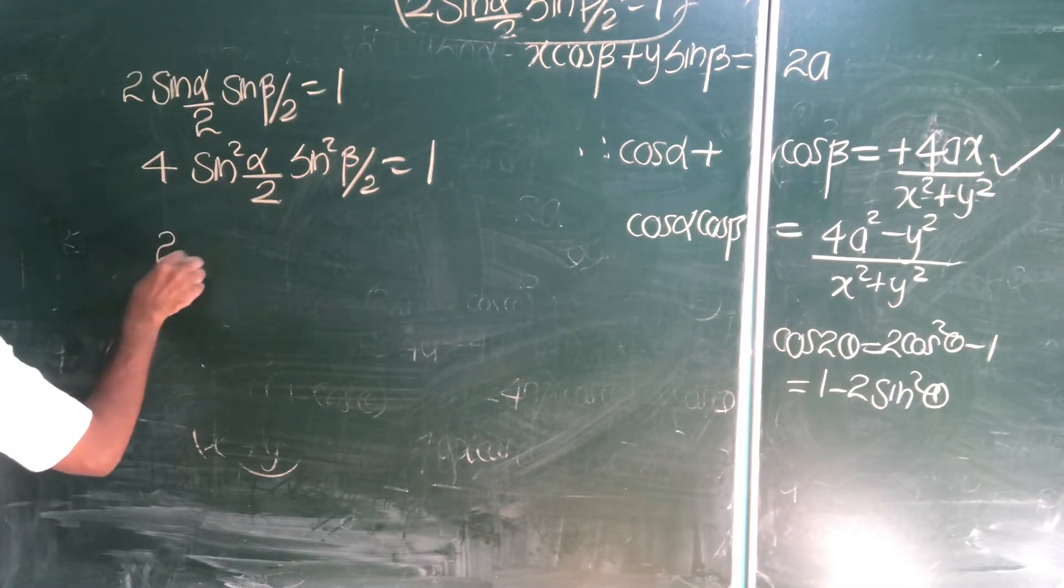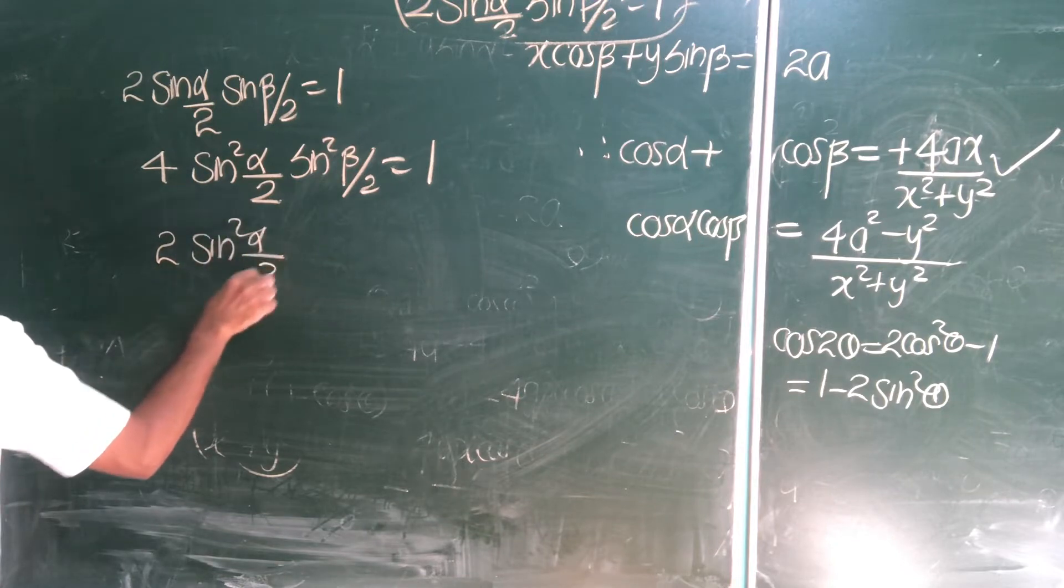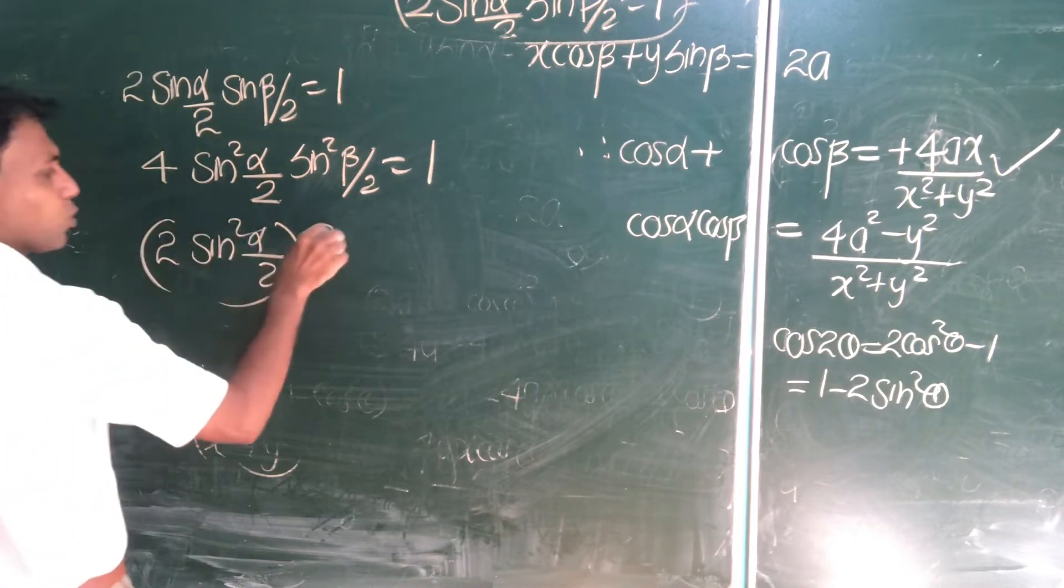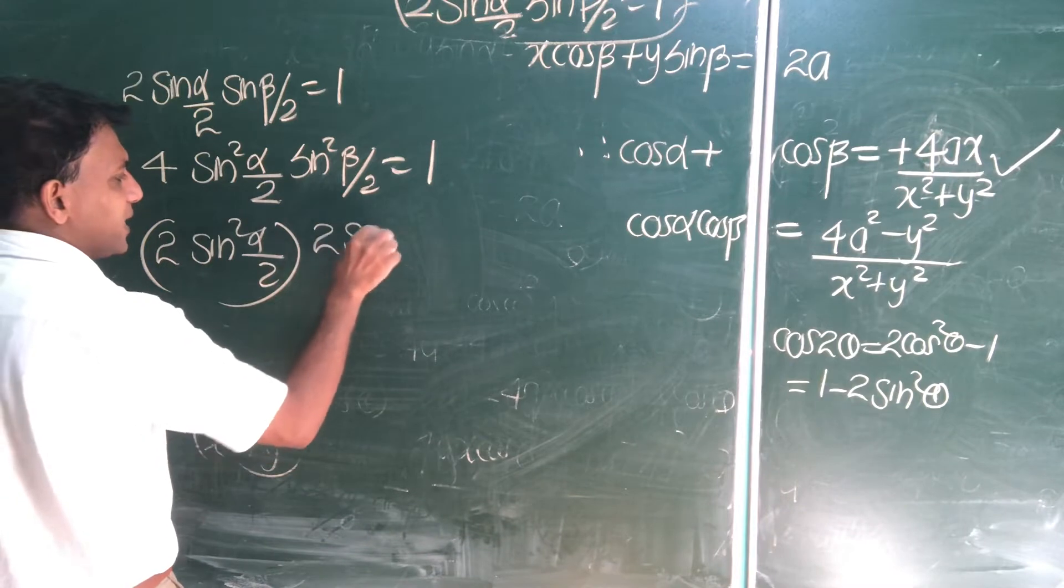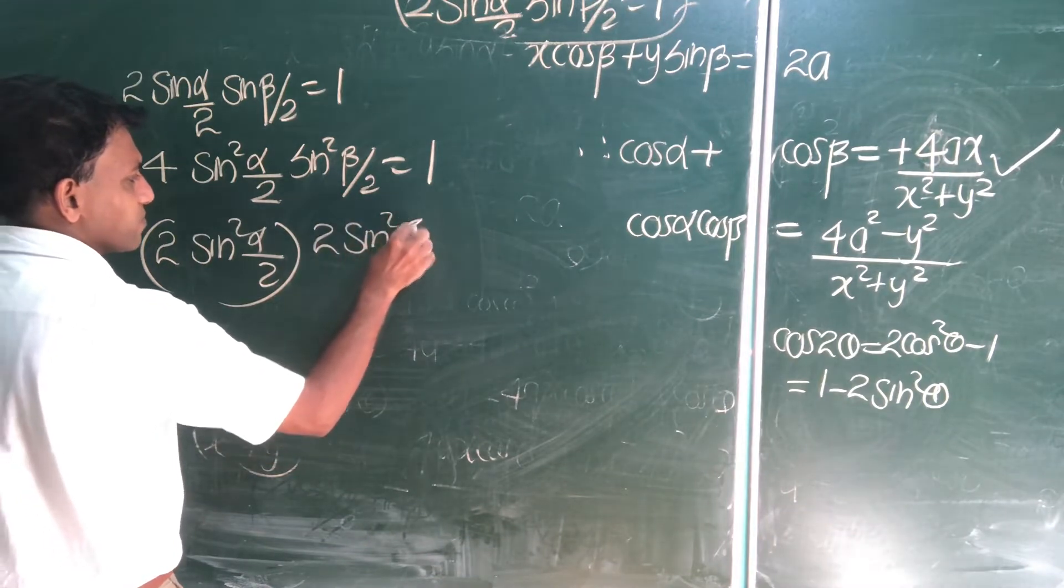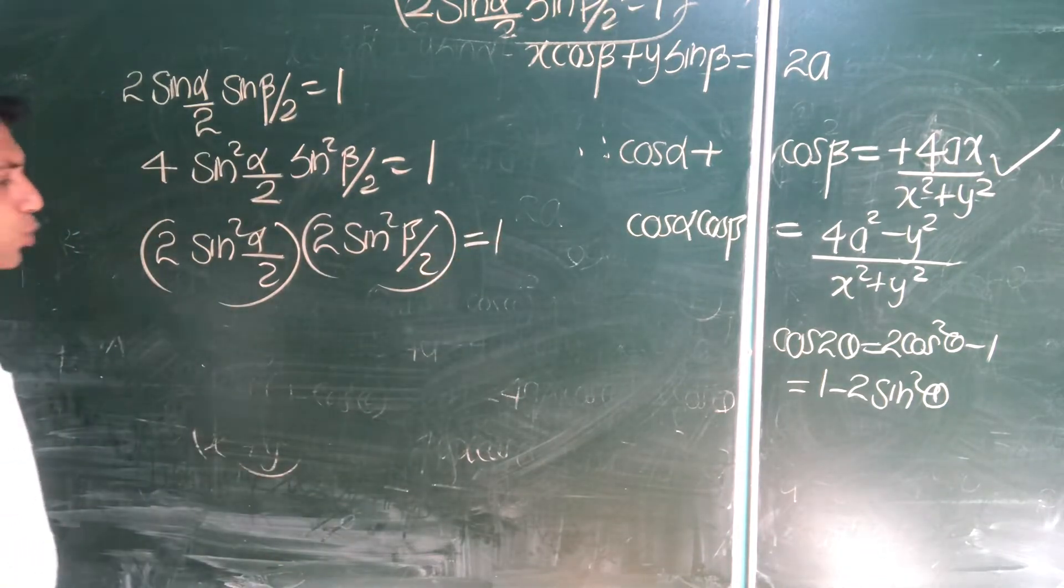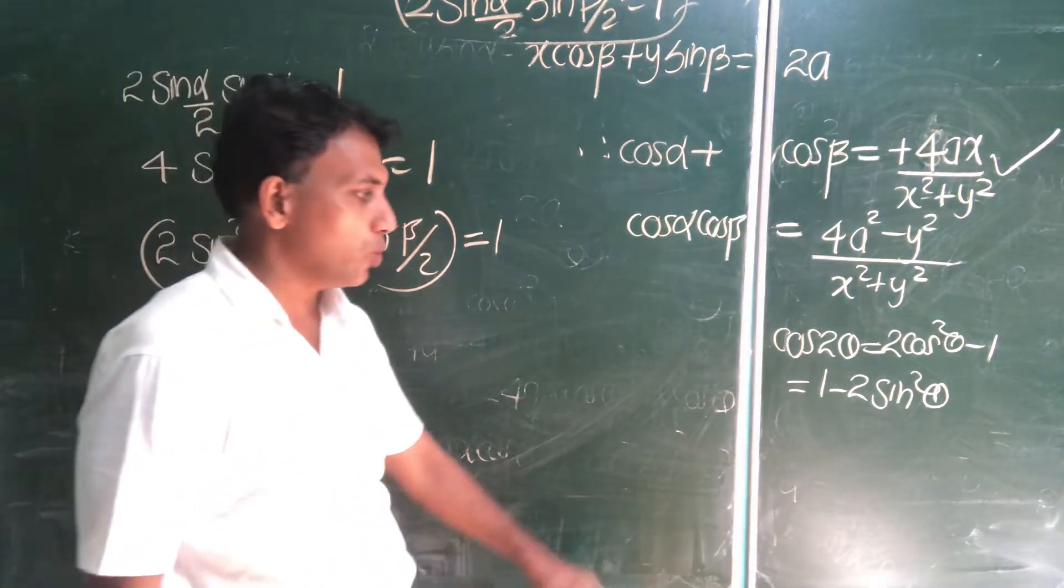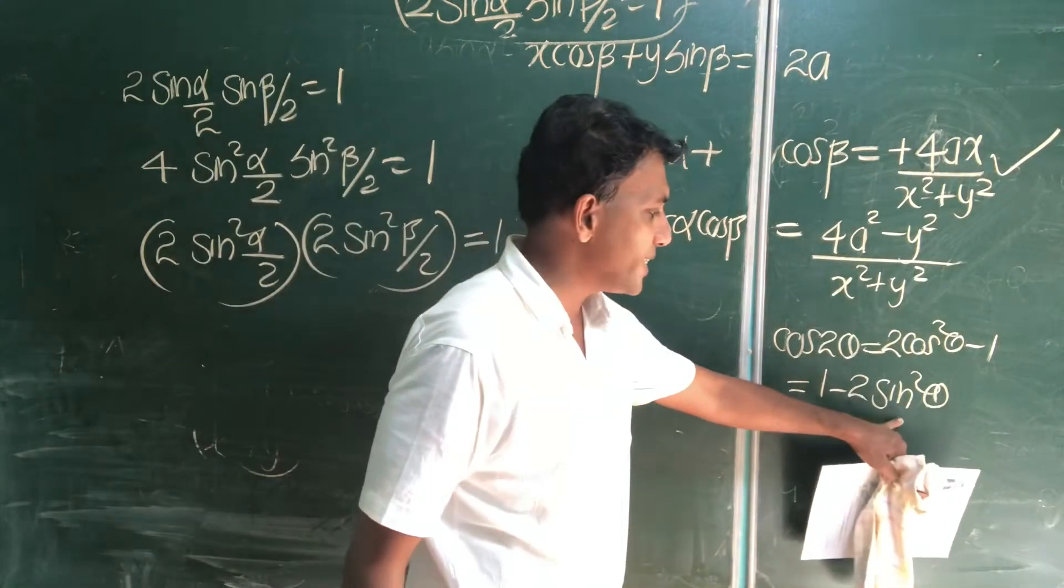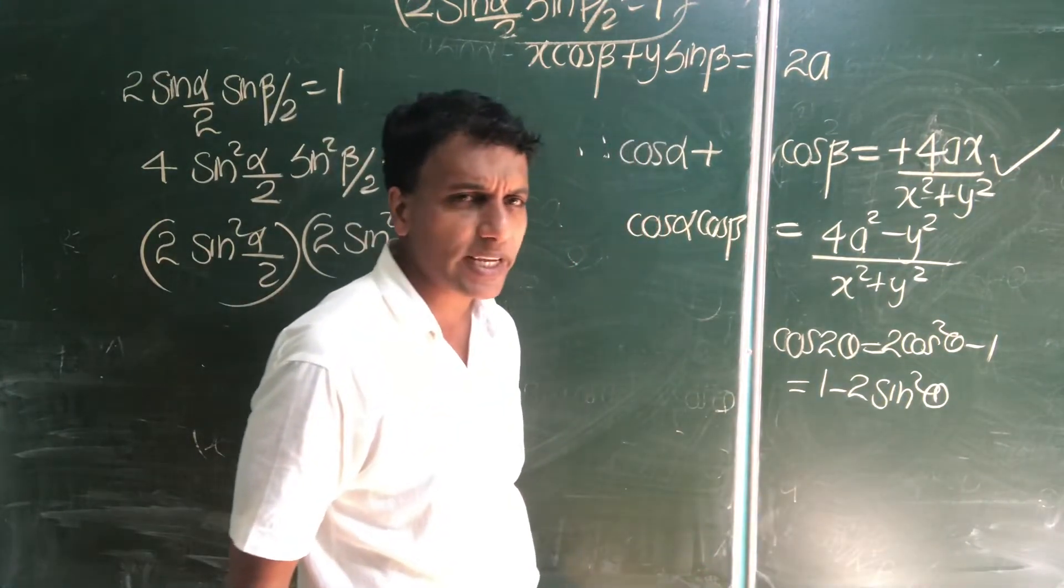Can I take this one? 2 times sin square alpha by 2. And the other one is 2 times sin square beta by 2, right? This equal to 1. What is 2 sin square alpha by 2? 2 sin square theta mean 1 minus cos 2 theta.